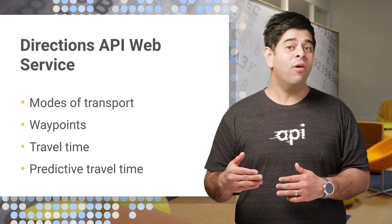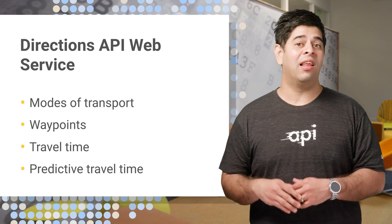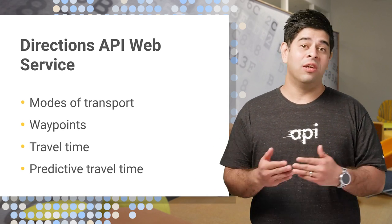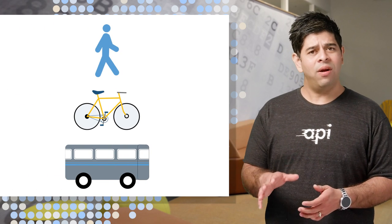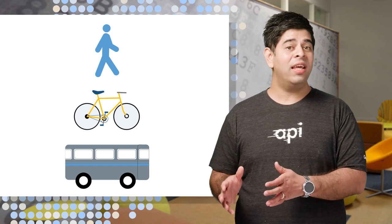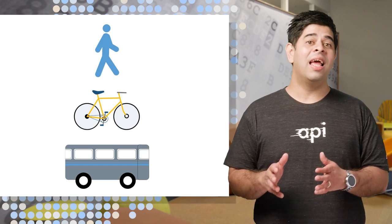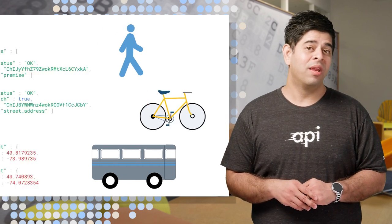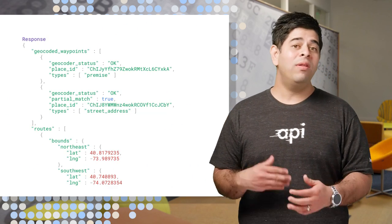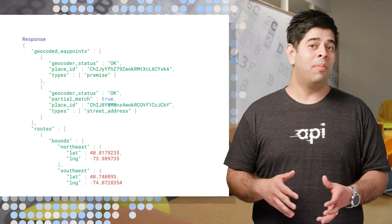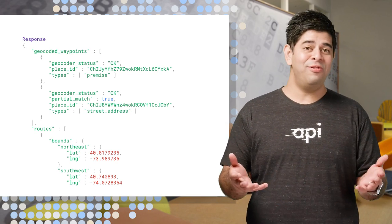We can forecast what traffic conditions are likely to be based on historic data. Directions aren't just for driving — the web service provides walking, biking, and public transport directions too. You can get all this information in JSON or XML, parse it, and use it.